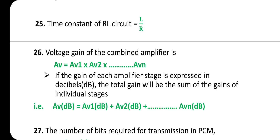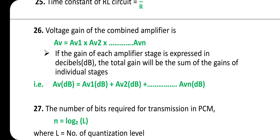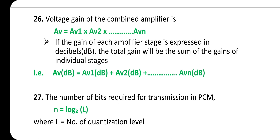Voltage gain of a cascaded amplifier is A_V = A_V1 × A_V2 × ... × A_Vn. If the gain of each amplifier stage is expressed in decibels, the total gain is the sum: A_V(dB) = A_V1(dB) + A_V2(dB) + ... + A_Vn(dB).